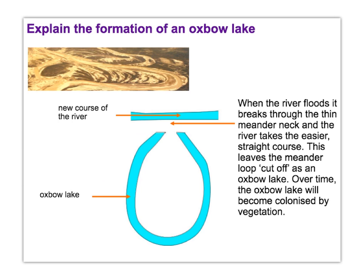An oxbow lake forms because of a meander. What happens is the meander forms and then after a while the meander's neck is broken off and an oxbow lake is created. This area here is the oxbow lake and this is the new river. Once upon a time the river used to flow all the way around the meander, but it decided to go straight across and break off the oxbow lake, leaving this feature here.